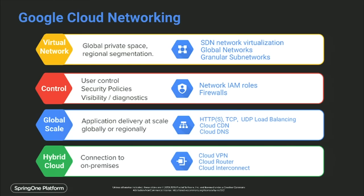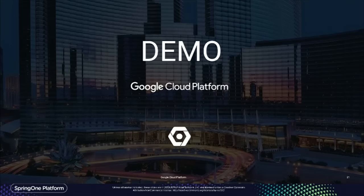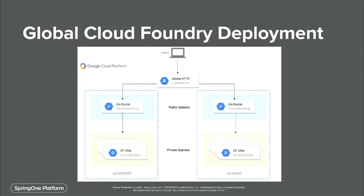Thanks Jay. I'm going to show a demo today of a global Cloud Foundry deployment. So how many people have deployed Cloud Foundry before? I'm going to show basically tying multiple regions of Cloud Foundry together using our global HTTP load balancer. The way this works is you get one anycast IP that you can use to route requests globally. We have a global domain app.gcp.solutions that routes traffic to two deployments of Cloud Foundry: one in US Central and one in US East.